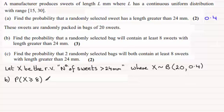And to do this, we could use the cumulative binomial probability tables. They give us the probability of being less than or equal to a given number. So I'm going to have this then as 1 minus the probability of X being less than or equal to 7.